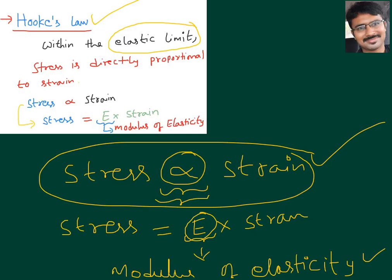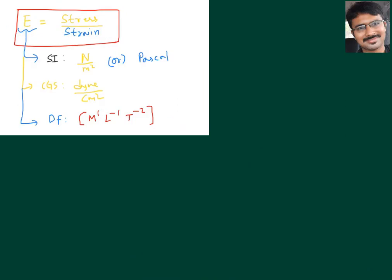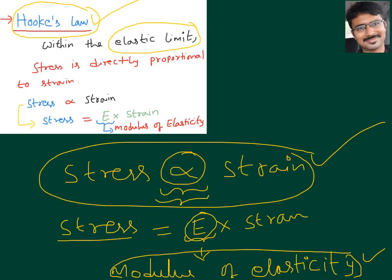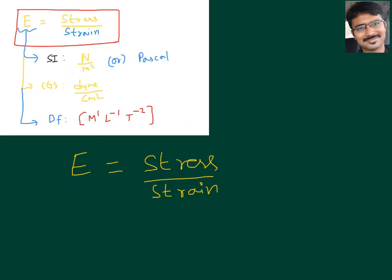That is about Hooke's law. From Hooke's law we get one new term — modulus of elasticity. What is modulus of elasticity? E = stress / strain. We get this by rearranging stress = E × strain, giving E = stress by strain.